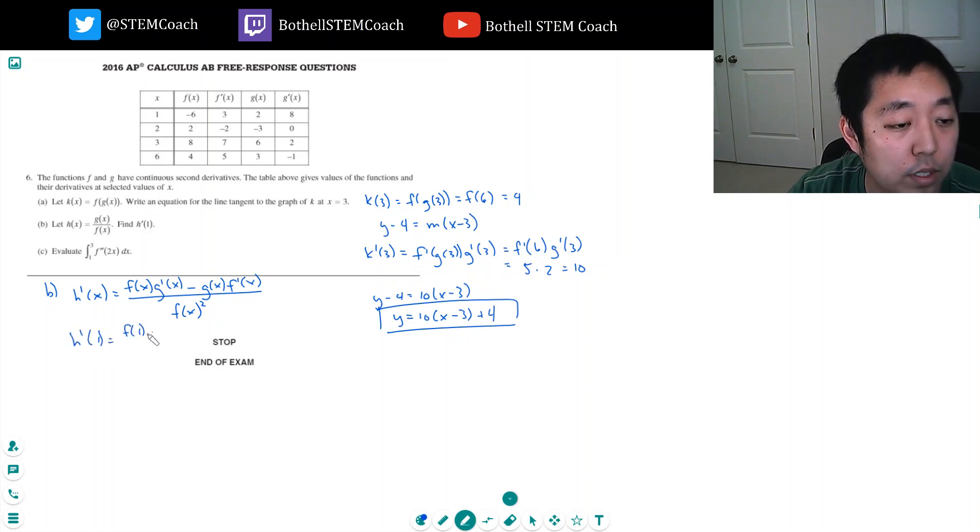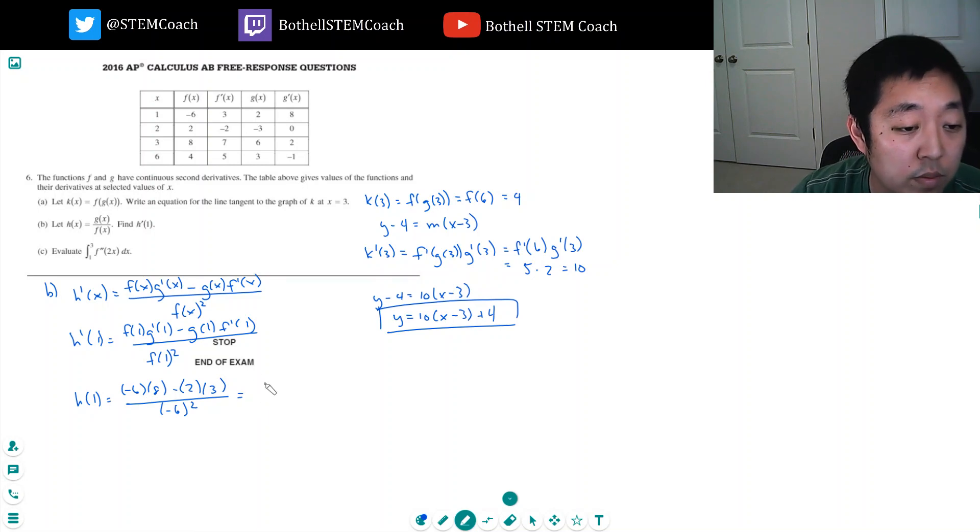When I plug in 1 I got to do f of 1 times g prime of 1 minus g of 1 times f prime of 1, all over f of 1 squared. So h of 1 is equal to f of 1 is negative 6, g prime of 1, minus g of 1 is 2, f prime of 1 is 3, all over f of 1 squared.